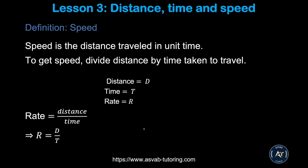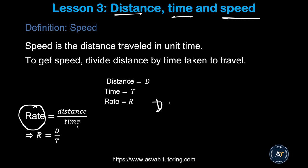The next thing we learn is a very important concept: how to find Distance, Time, and Speed. Speed is the distance traveled in unit time. Say you are driving from New York to Washington D.C., which is around 280 miles. If it takes 5 hours for you to drive, how fast did you go? How fast you drove is called speed or rate. To find the rate, you divide distance by time. Remember the formula: R equals D over T, or D equals RT.